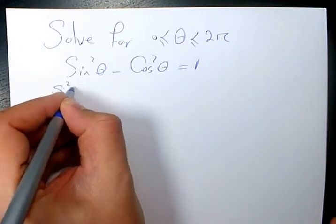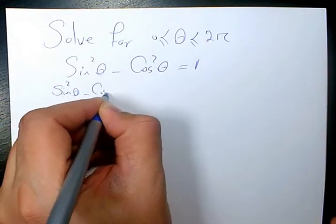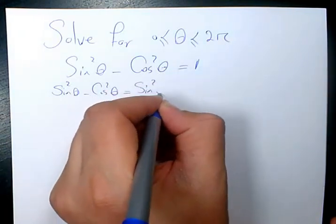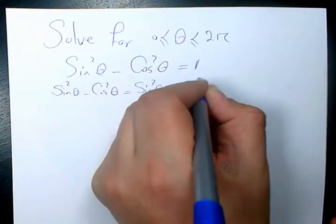So I will write sin²θ - cos²θ equals sin²θ + cos²θ.